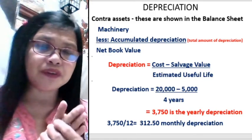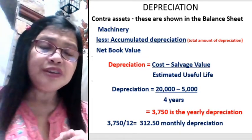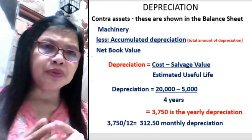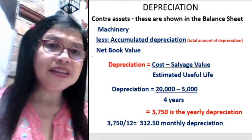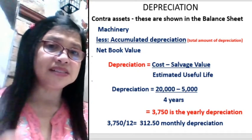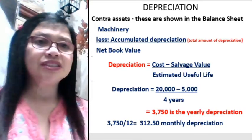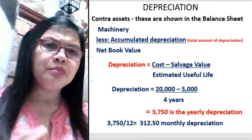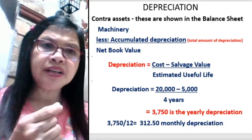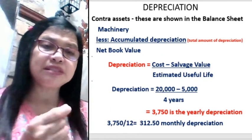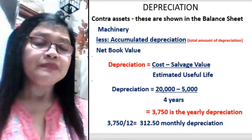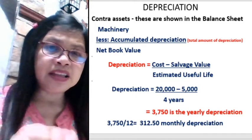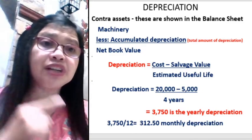The machine has an estimated useful life of four years. On the fourth year, the value of the machine is still $5,000. So the depreciation of the machinery for every year is: $20,000 minus the salvage value of $5,000 divided by the estimated useful life of four years, giving you $3,750. That means $3,750 is your annual or yearly depreciation. If you bought this machinery in 2020, after one year in 2021, the net book value decreases by $3,750 per year.